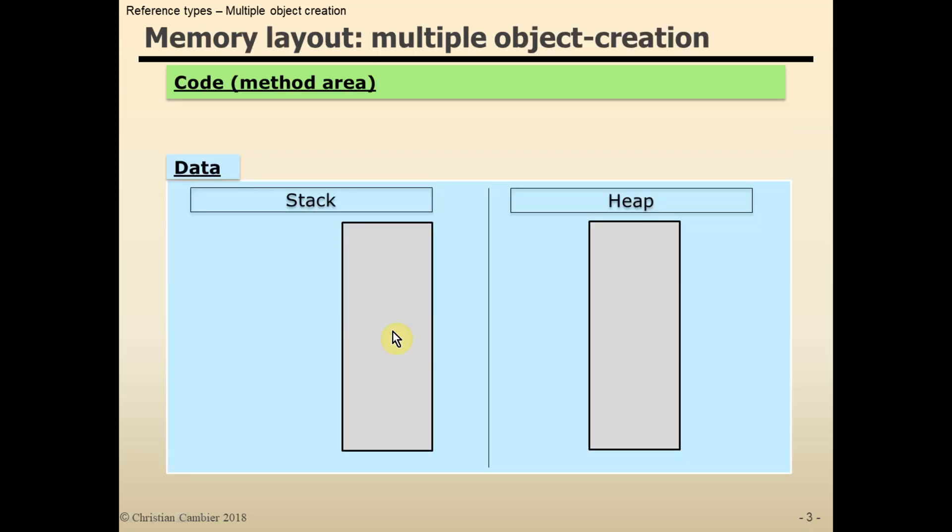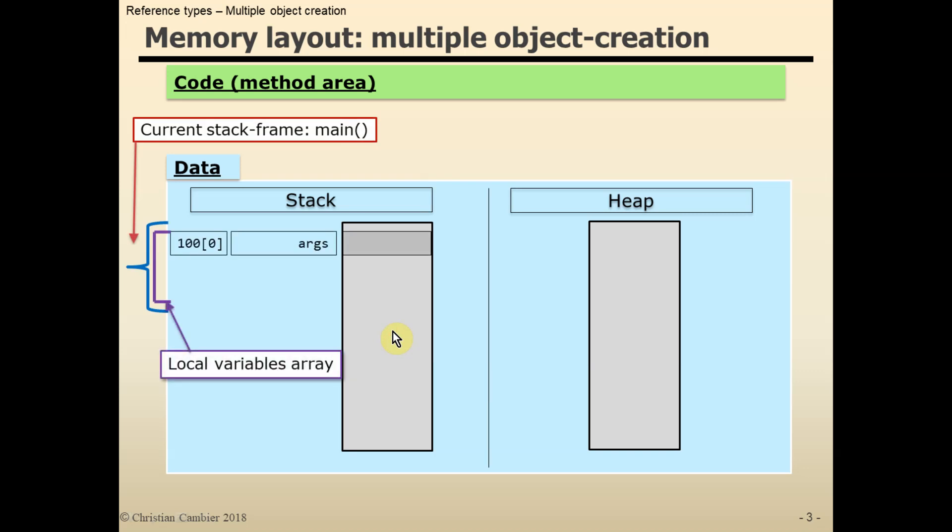Let's first set up the stack frame of the main method. At the first position in the local variables array we note the presence of the arguments parameter of the main method.